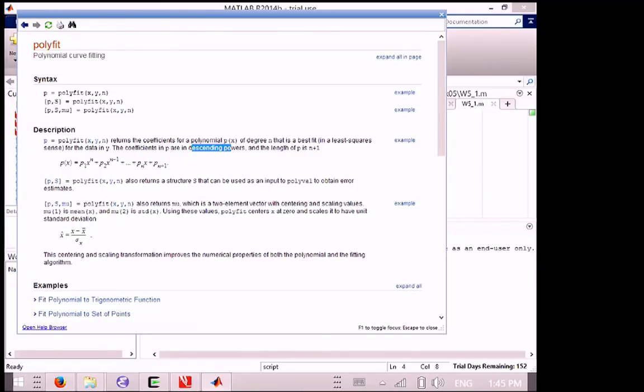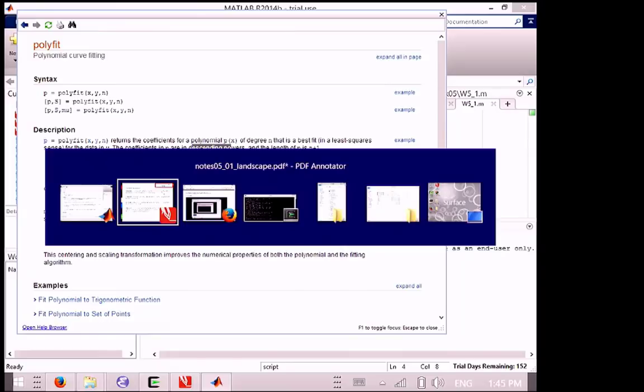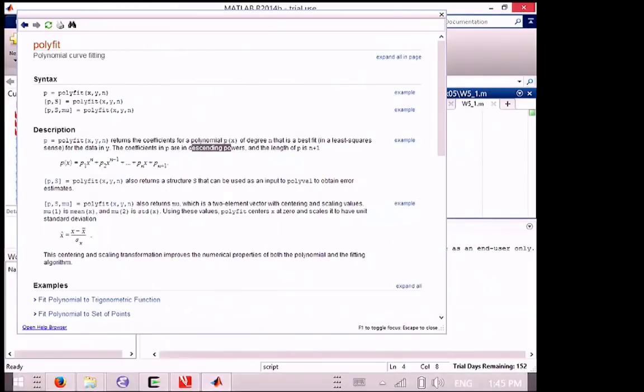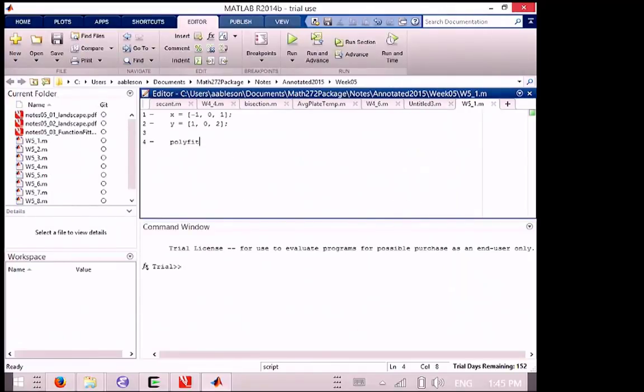Polyfit returns the coefficients for a polynomial of degree n that is the best fit to the data in y. The coefficients we get back are in descending power. So we've actually seen this before. When we did the roots of a polynomial, we had to present the coefficients in highest to lowest order. MATLAB tries to be consistent about these common patterns, so here it'll be coefficients from high order to low order.